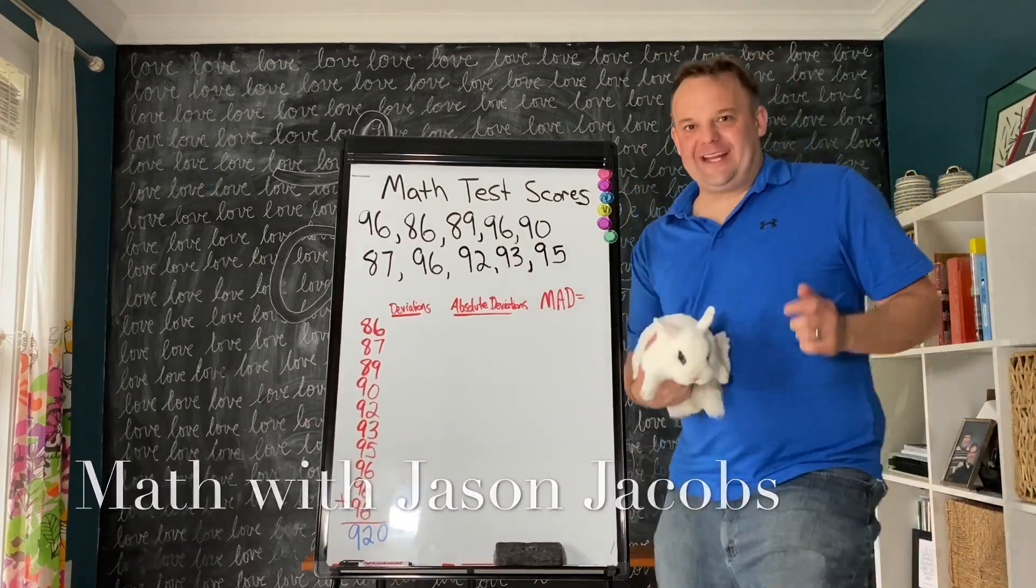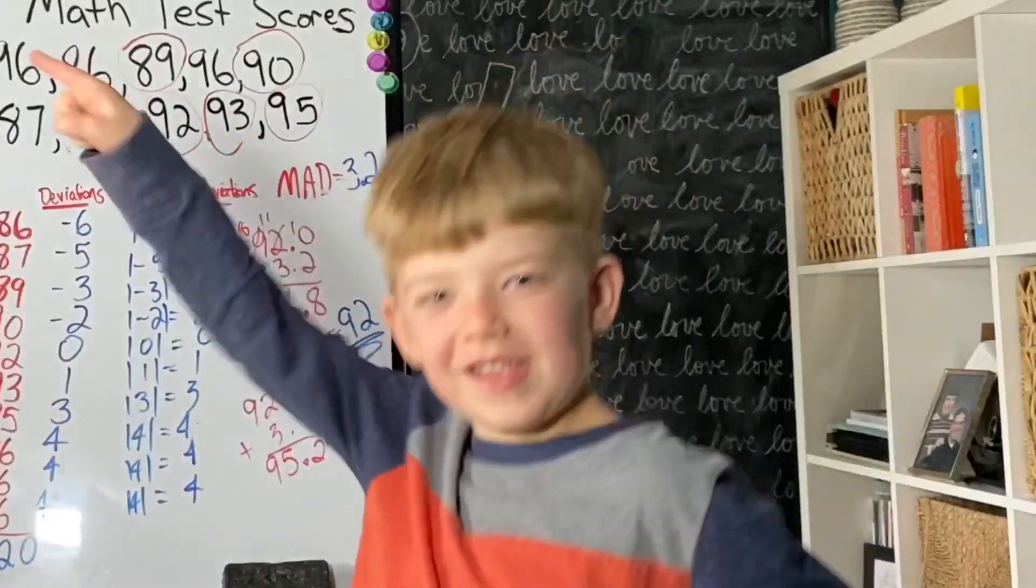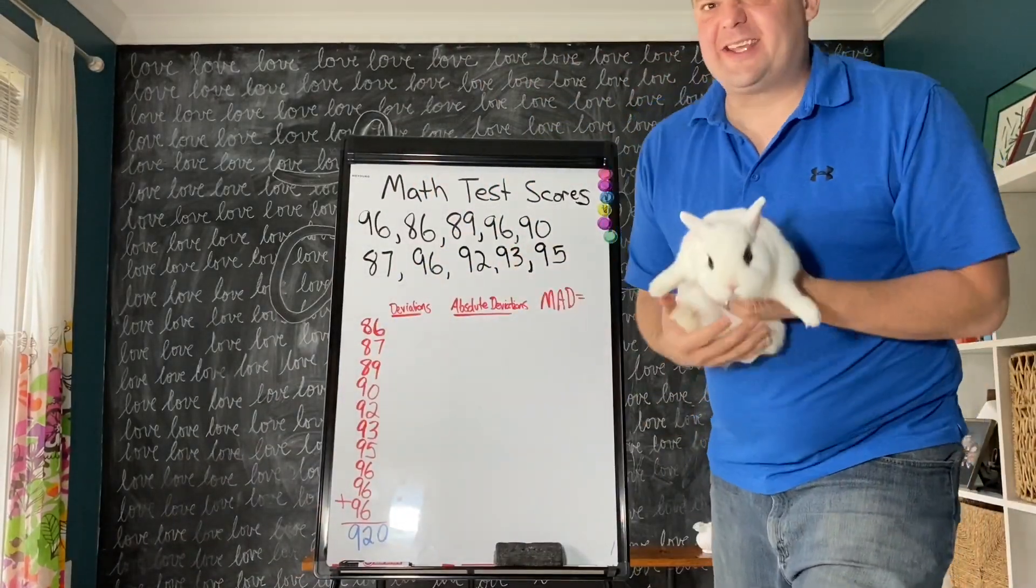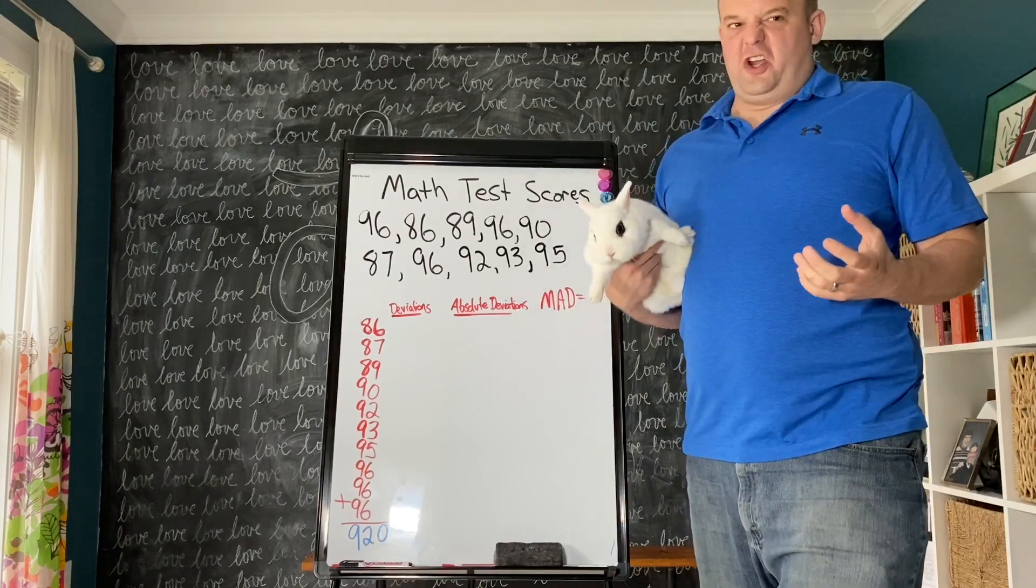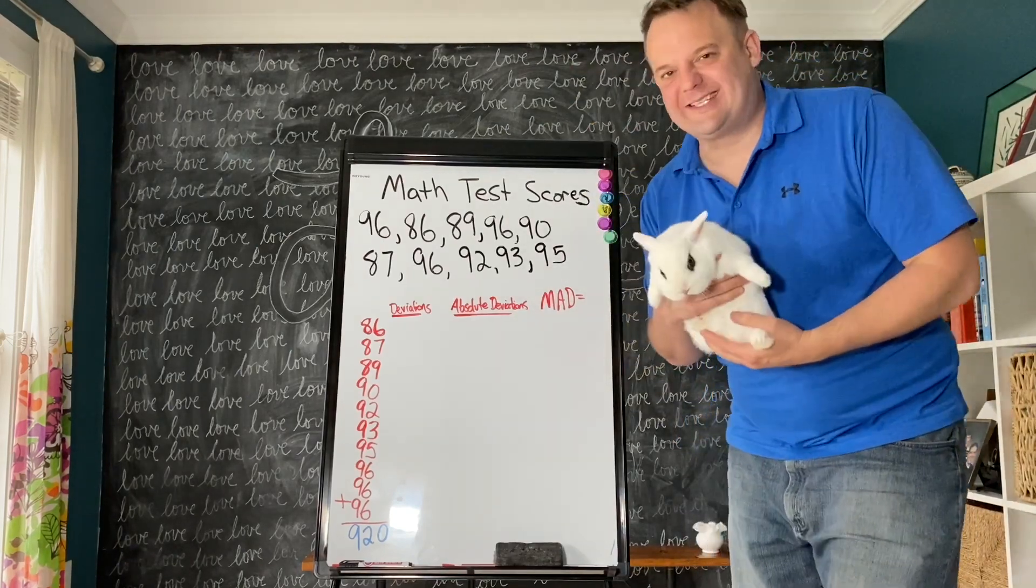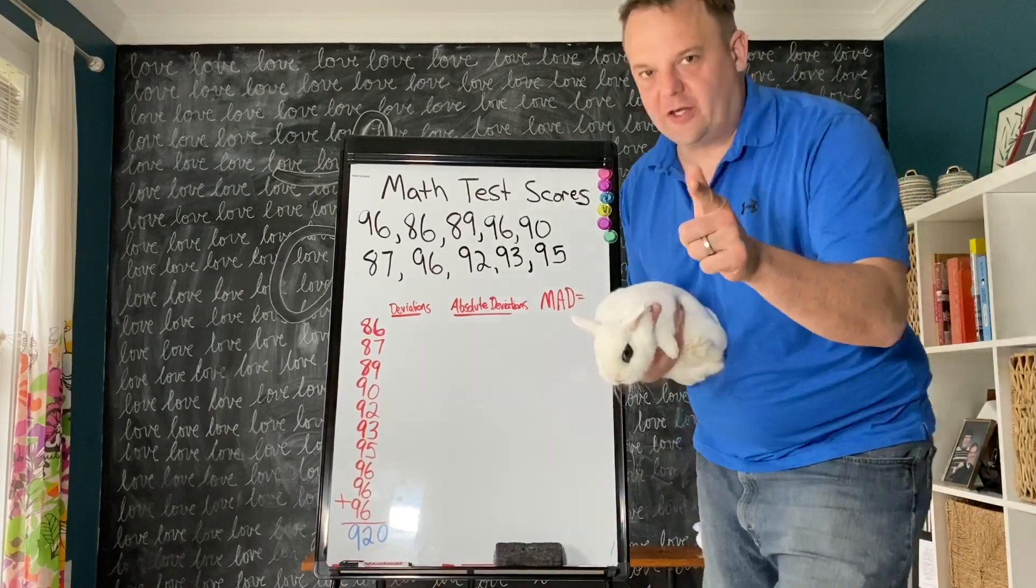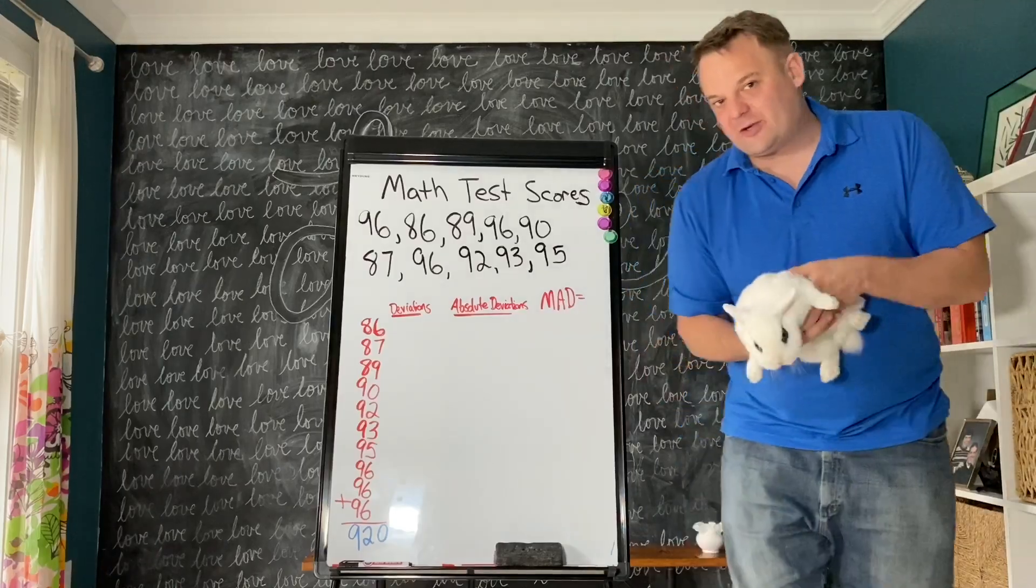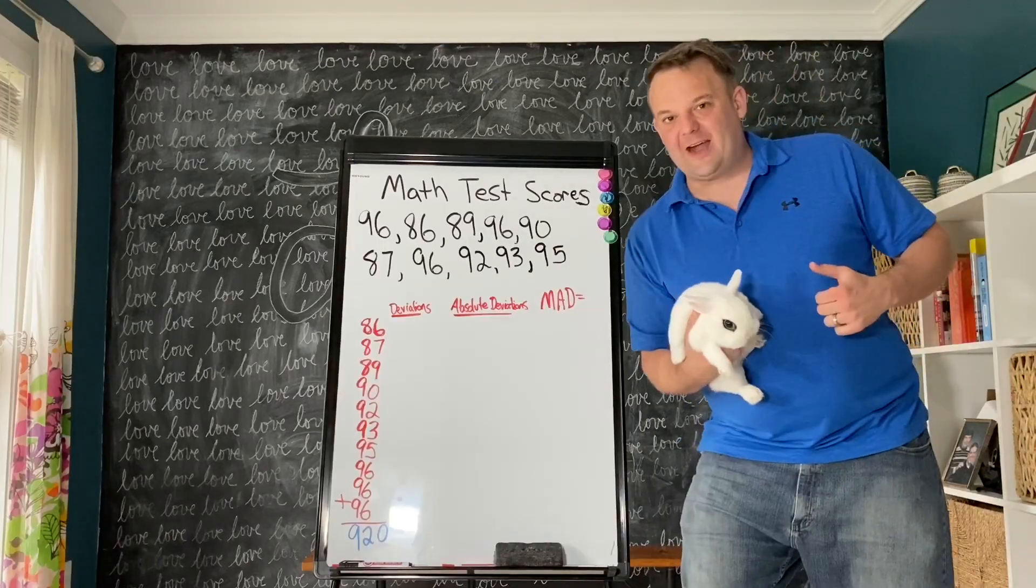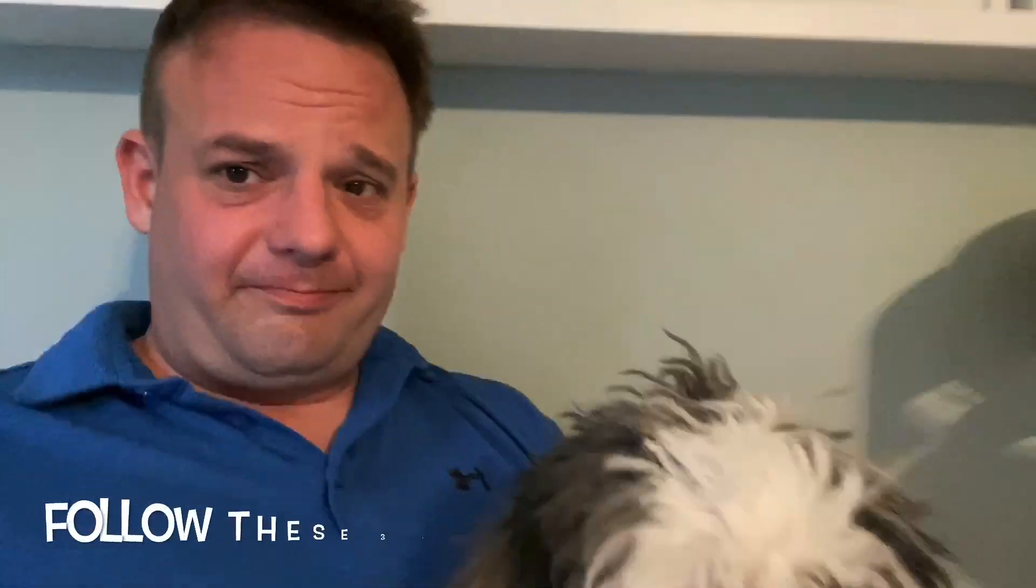Welcome everyone! Today we're going to be finding the MAD - the mean absolute deviation. It's one of the hardest things we do in sixth grade, but you can do it. I wish I was there in person to teach this to you, but that's okay. Bubbles and I will teach you how to find the MAD. My wife cut my hair as you can see, saving a lot of money.